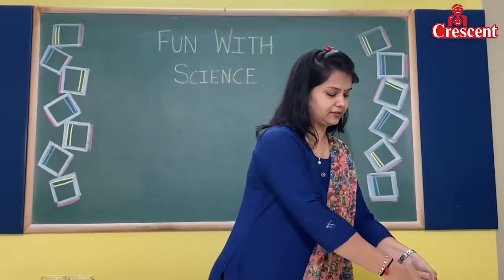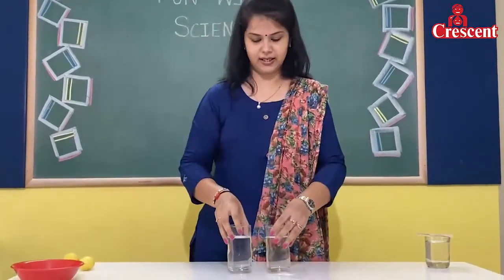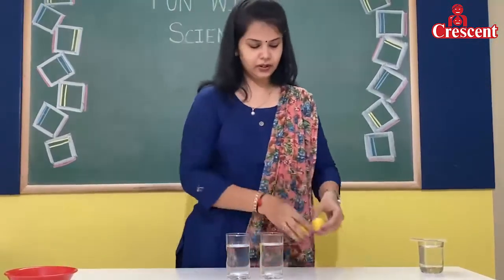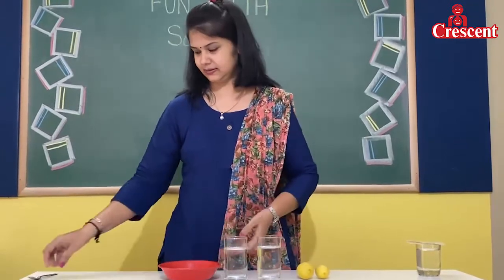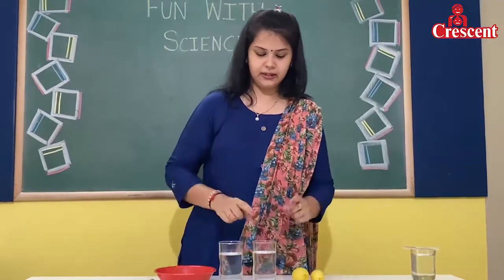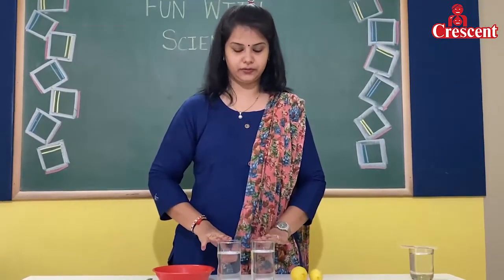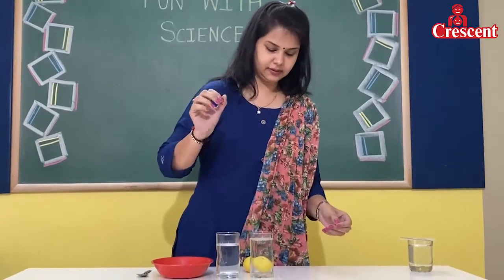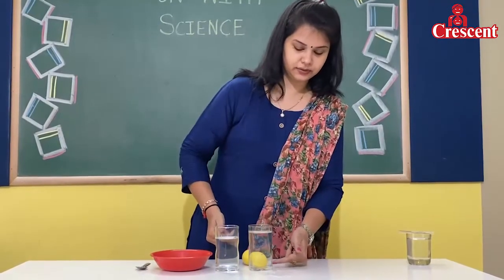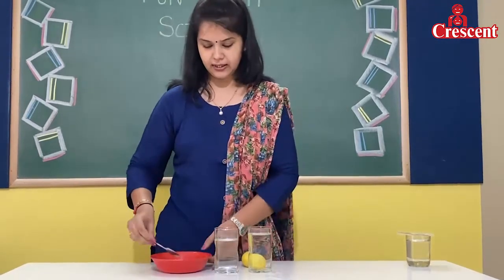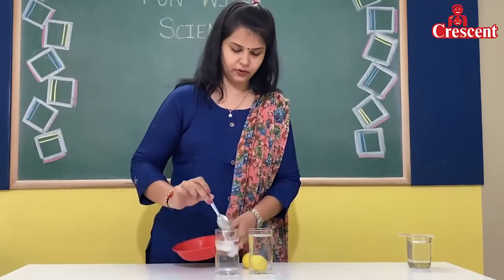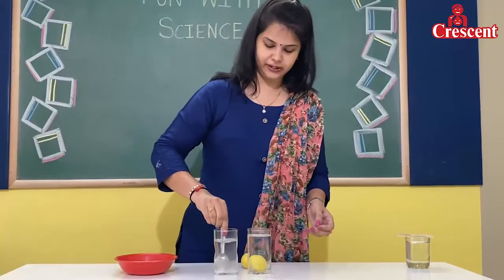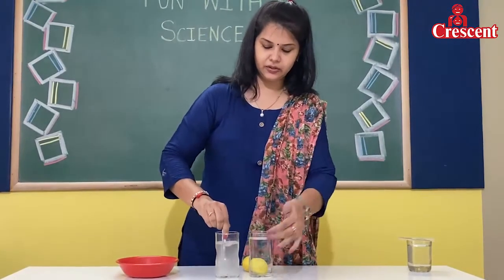Now, the next activity is on water density. For that, you need two glasses of water, two lemons, some salt, and one spoon. These two glasses have plain water. In this glass, first we put a lemon. See, it goes down — it sinks. Now we add some salt in the water — one, two, three spoons. Now stir it properly until it dissolves in the water.